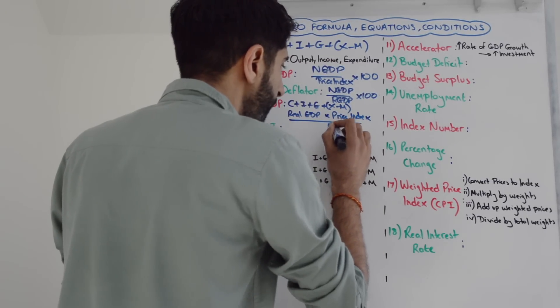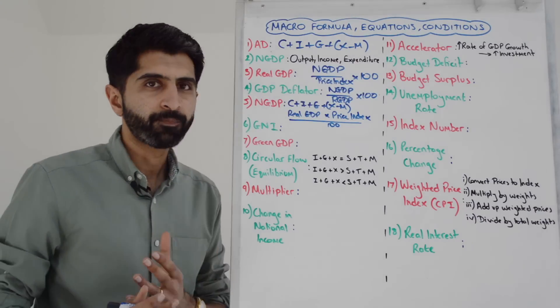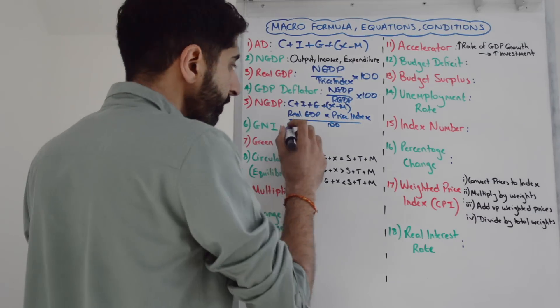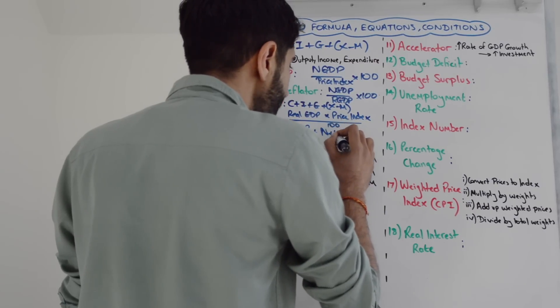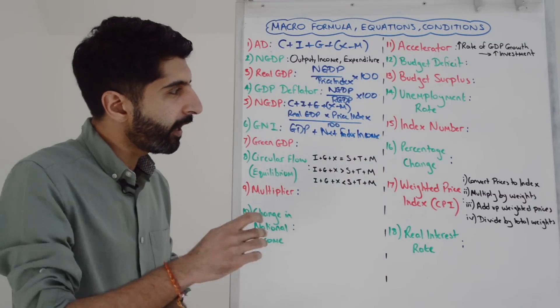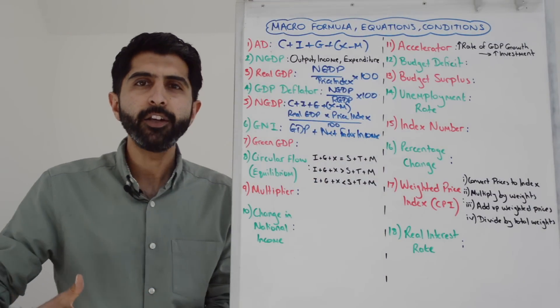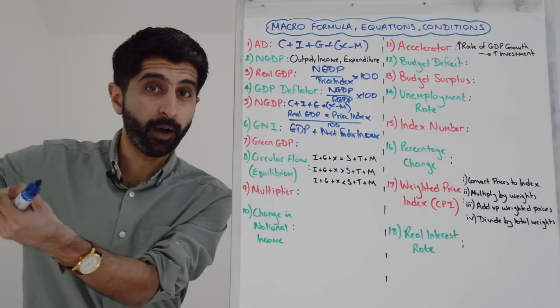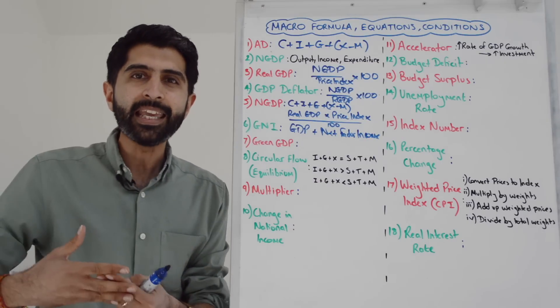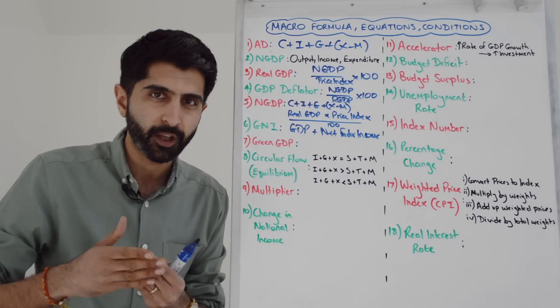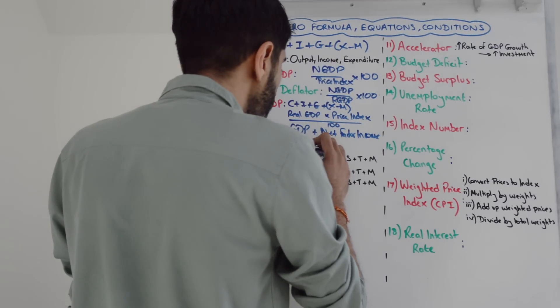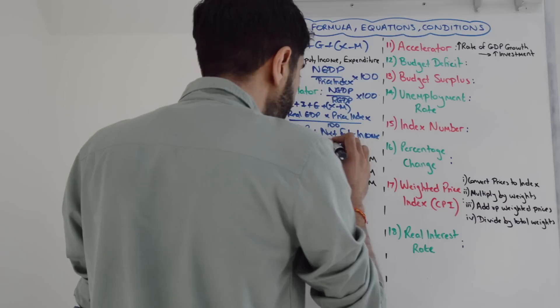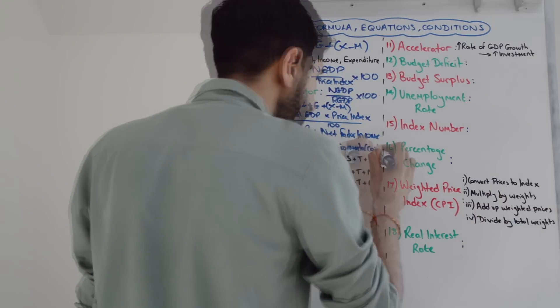What about GNI? Well, GNI is GDP plus net factor income. What's net factor income? This is any income earned by domestic factors of production abroad minus any income earned by foreign factors of production domestically. That's how you get GNI. Green GDP is GDP minus any environmental costs.